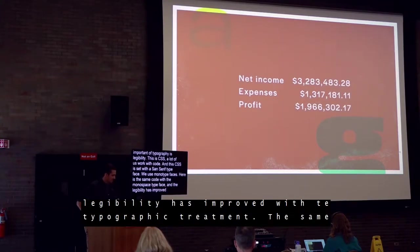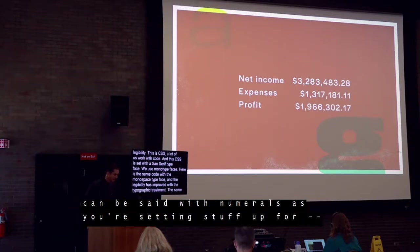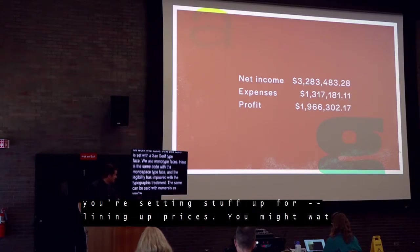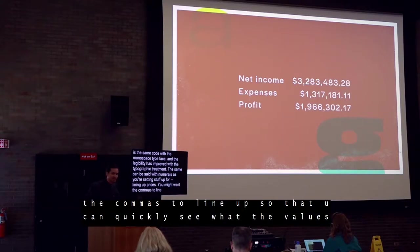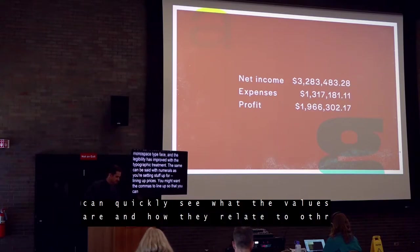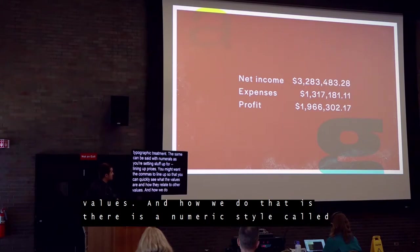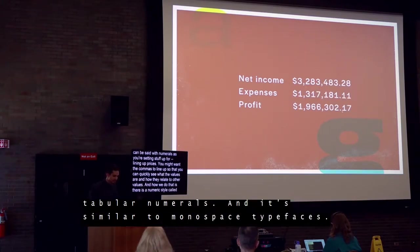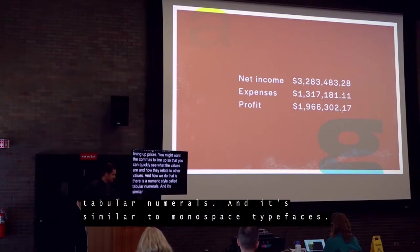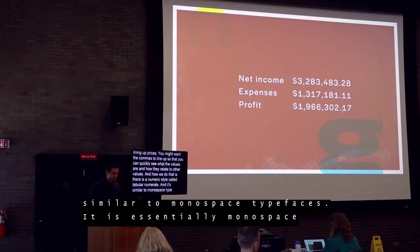The same can be said when setting up tables for lining up prices. You might want the commas to line up so that you can quickly see what the values are and how they relate to other values. How we do that is with a numeric style called tabular numerals, which is similar to monospace typefaces — essentially monospace numerals intended for tabular data.